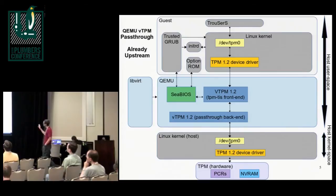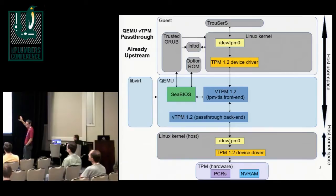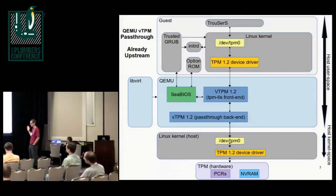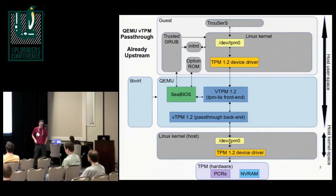Here's an overview of what we have managed to get into QEMU today — this is upstream. The top box is all what would run in the guest, which is exactly the same stack as runs in a physical machine — device drivers, TrouSerS, and so on. In QEMU, we have a TPM front end, some BIOS code, some live-virt stuff to manage it, and a pass-through back end. It then talks to the normal Linux stack, and underneath we have some TPM hardware. This works perfectly fine if you only want to run one guest per physical machine, or if you want one physical TPM for every guest — which is a lot of hardware.